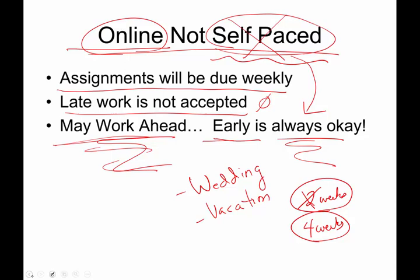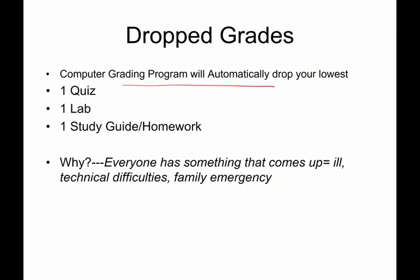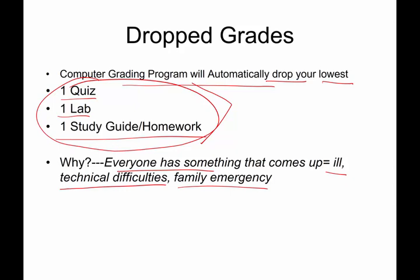Dropped grades. All your grades are going to be put into a computer program and the program will automatically drop your lowest quiz, lab, and study guide grade. Why? Everybody has something that comes up — you get sick, you have technical difficulties, a computer doesn't work, your internet doesn't work, or you have a family emergency. By dropping your lowest grade, it gives you a freebie for each of these cases. Life just plain happens. If you have a nice boring semester and nothing weird happens, then the lowest grade will get dropped and it will help elevate your grade. For example, if you have one quiz where you get 8 out of 20 and all the rest of your quizzes you get 20 out of 20, the computer will drop the low one and it will make your grade a smidge higher. So it is to your benefit and does not do you any harm.